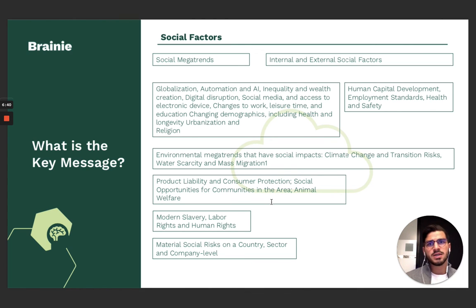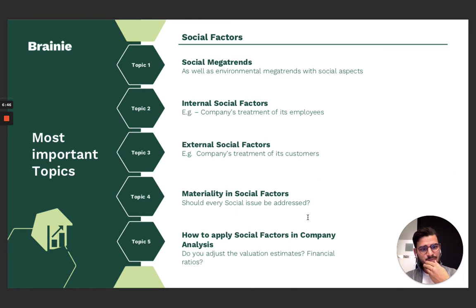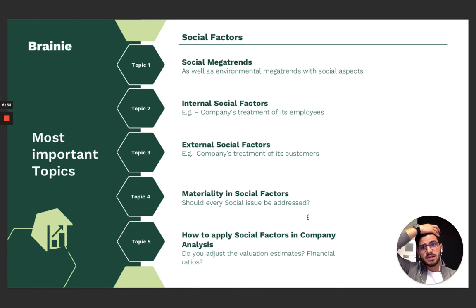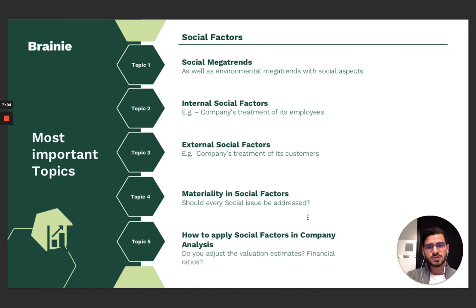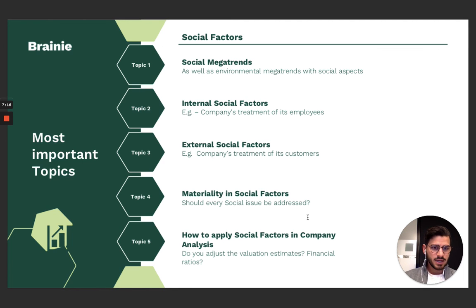This chapter is not too long and also not too difficult to understand. When it comes to the five most important topics, in my opinion, we would say: definitely understand the social megatrends, the internal social factors and the external social factors, materiality in social factors, and lastly how to apply social factors in company analysis. The chapter is not too long, so definitely make sure that you have read it, but that should not be the most challenging one in your study progress.